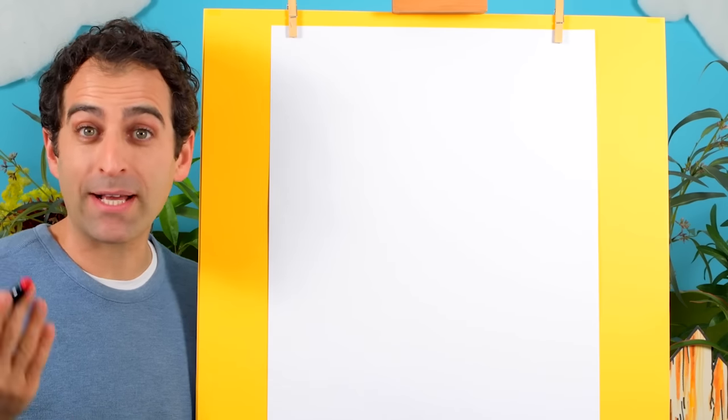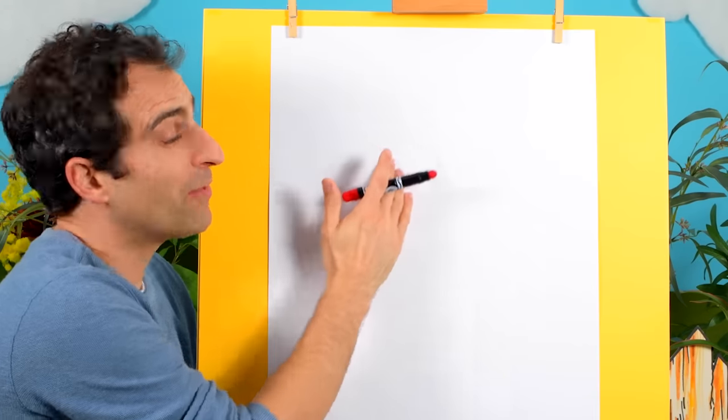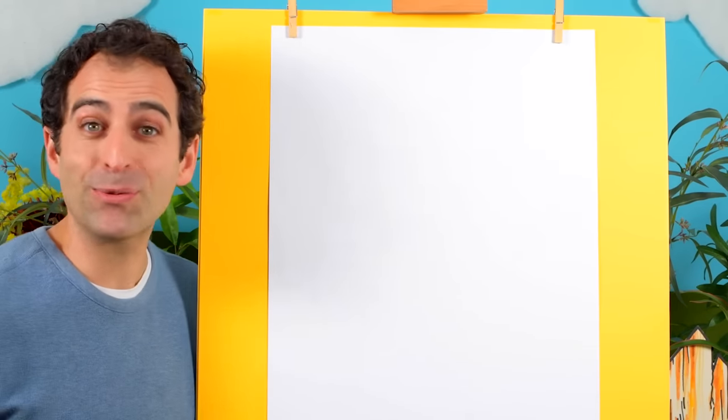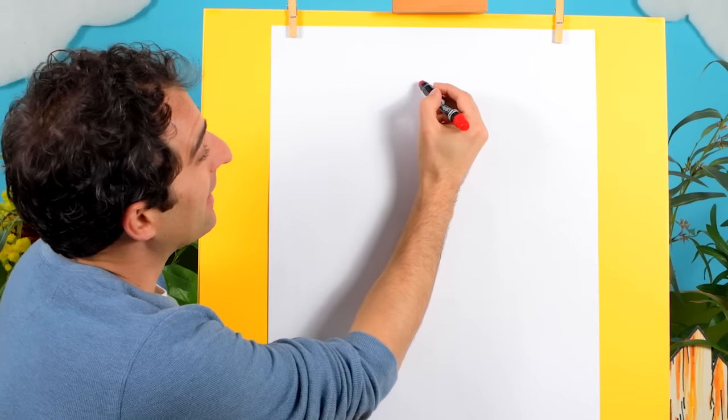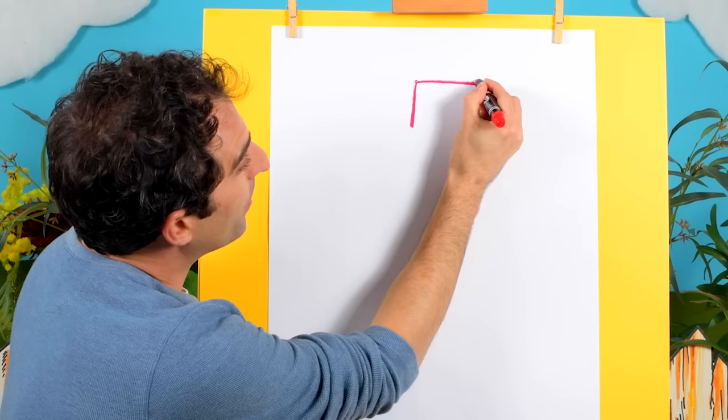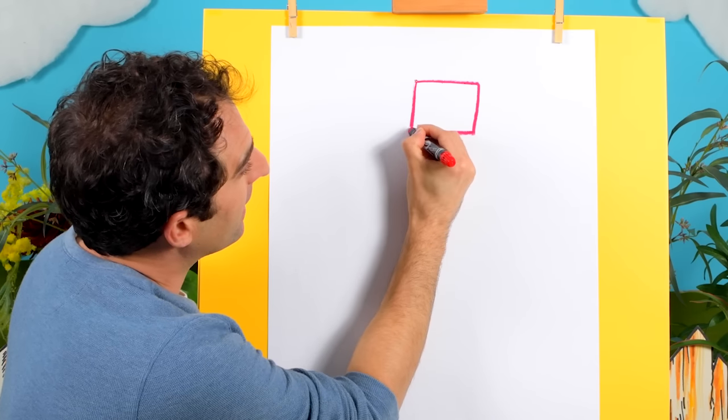Okay, let's begin with drawing our car. We'll draw that at the top of our page, and I'm using a red crayon, but you can pick whatever color you would like. So let's start with drawing a square up the top here, just like that.